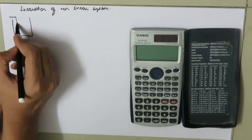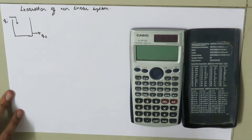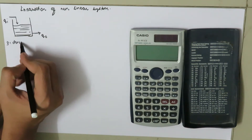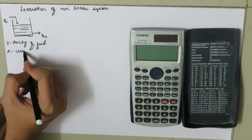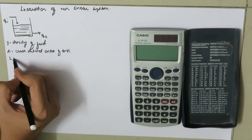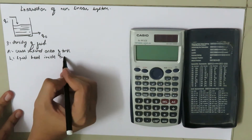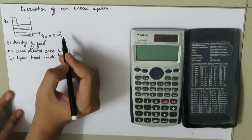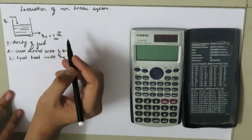Suppose we have a tank with cross-sectional area A. This is the inlet volumetric flow rate and here we have the outlet volumetric flow rate Q_o. Rho is the density of fluid, A is the cross-sectional area of the tank, H is the liquid head inside the tank, and the outlet volumetric flow rate is related to C times root H.